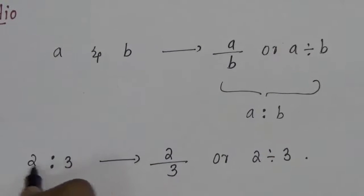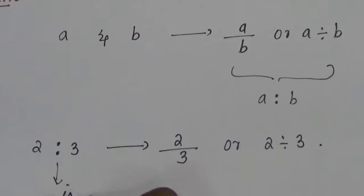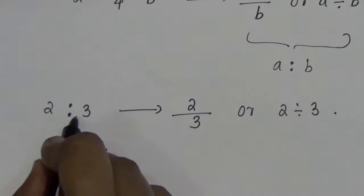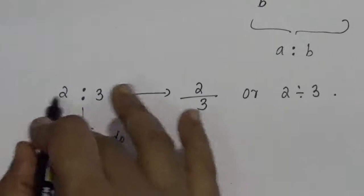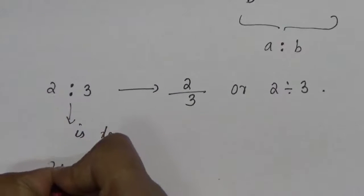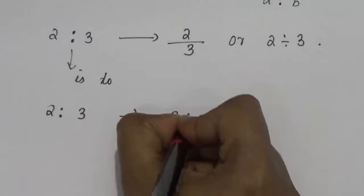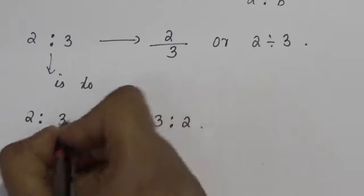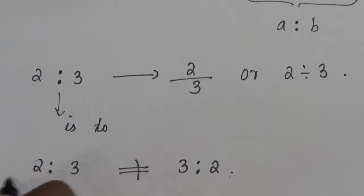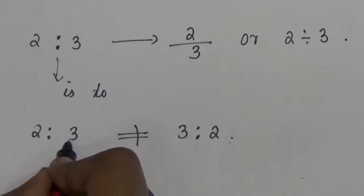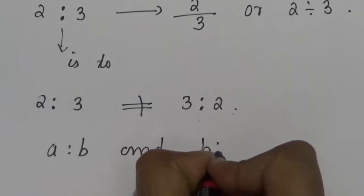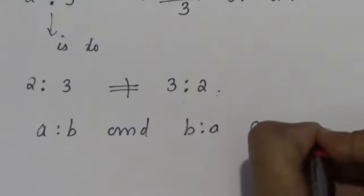It can be read as 'two is to three.' The colon symbol is used for 'is to,' so this is two is to three. Now, the order of the terms in the ratio is important. That is, two is to three is not equal to three is to two. Remember that the order of the ratio is very important. In general, if these two numbers are not the same, then A is to B and B is to A are different.